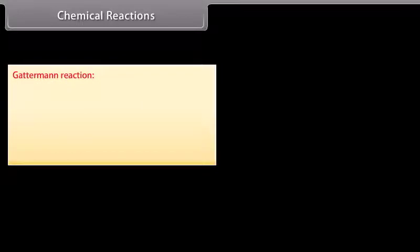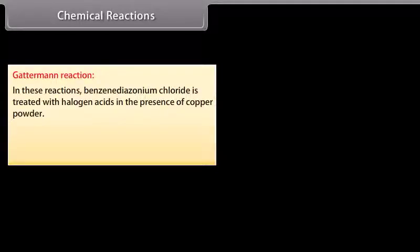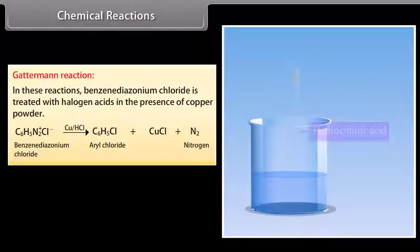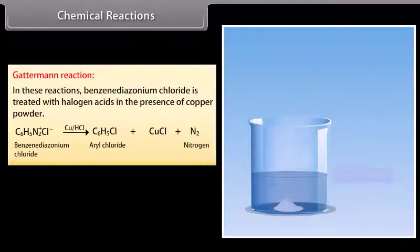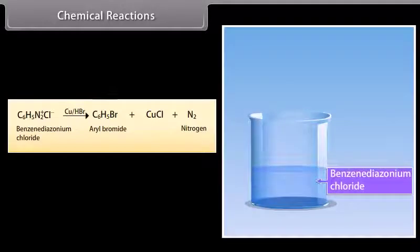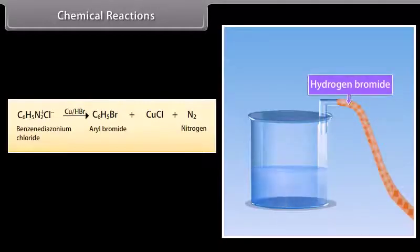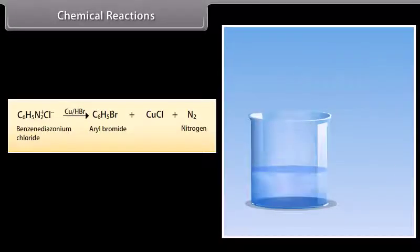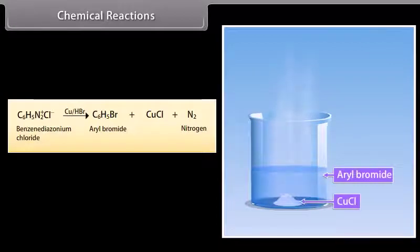Gattermann reaction: Benzene diazonium chloride is treated with halogen acids in the presence of copper powder. Benzene diazonium chloride reacts with hydrochloric acid and copper powder to yield aryl chloride, cuprous chloride, and nitrogen gas. Benzene diazonium chloride reacts with hydrogen bromide and copper powder to yield aryl bromide, cuprous chloride, and nitrogen gas.